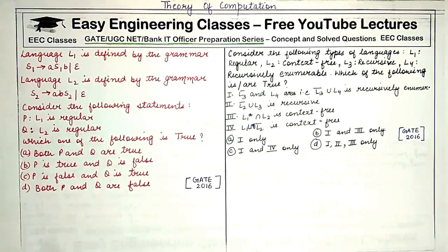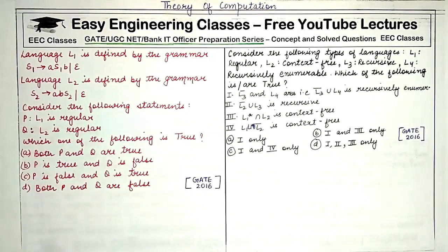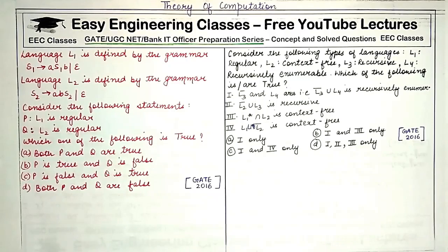Since we have to find out which of the two grammars is regular, we need to remember the basic definition of a regular language. A regular language is one that can be expressed in a right linear form or a left linear form. In a right linear grammar, all productions have at most a single non-terminal on the right hand side, and that non-terminal is present at the rightmost side.